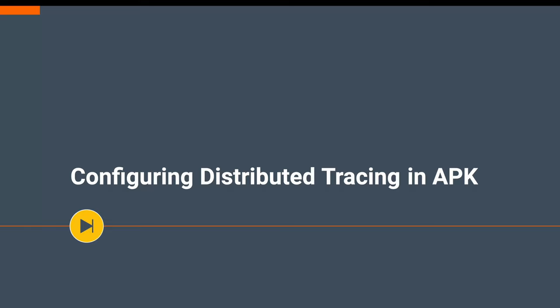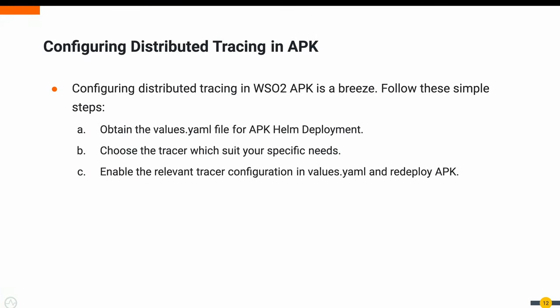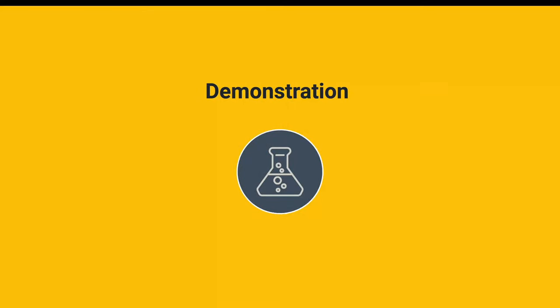Now, let's transition from theory to practice. Configuring distributed tracing in WSO2 APK is a straightforward process and we'll walk through the steps to set it up. Whether you are a seasoned developer or just starting with distributed tracing, WSO2 APK makes the integration seamless and accessible. Configuring distributed tracing involves following the instructions in the APK documentation. Obtain the values for your Helm deployment and with a few tailored adjustments, your APK is ready to connect to your chosen distributed tracing system. For those eager to explore without an actual deployment, we'll show you how to kickstart APK together with Jaeger using provided Kubernetes deployment artifacts — an ideal way to test tracing capabilities in a controlled environment.